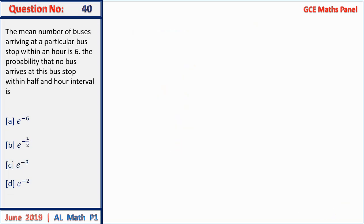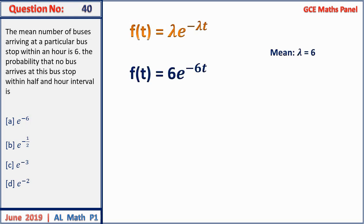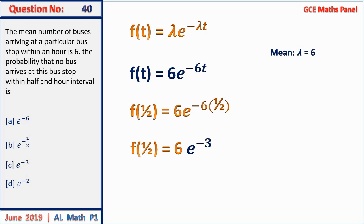Question 40: buses arrive at a rate of 6 per hour. Find the probability no bus arrives in a half-hour interval. Using the exponential distribution f(t) = λe^(−λt) with λ = 6, f(1/2) = 6e^(−3). The probability is e^(−3). Answer C.